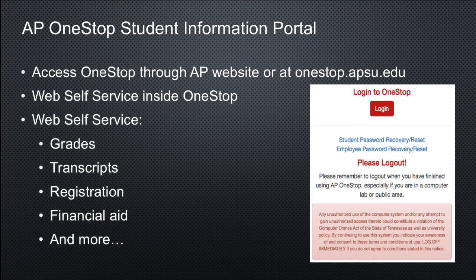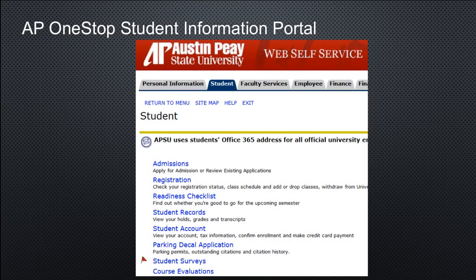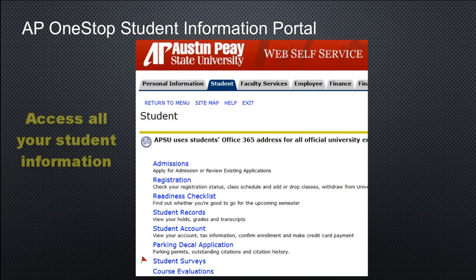AP One Stop is the hub for connecting to the university. You can log in by selecting One Stop on the APSU website or by going there directly at onestop.apsu.edu. As you can see, there are many tools to explore. Today we are going to start by highlighting web self-service, through which you are able to access all your student information including grades, transcripts, registration, and financial aid.